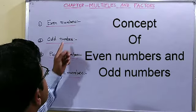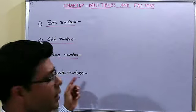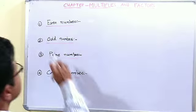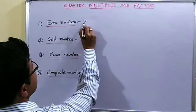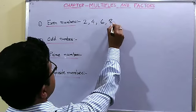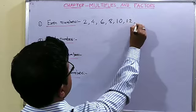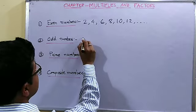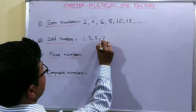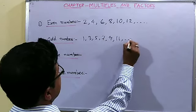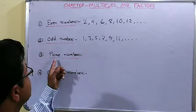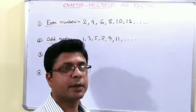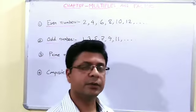We have understood what are even numbers and what are odd numbers. Even numbers are the multiples of 2: 2, 4, 6, 8 and so on. The numbers which are not multiples of 2 are all odd numbers — they start from 1: 1, 3, 5, 7, 9, 11. Now please listen carefully. What is the definition of prime numbers? Prime numbers are those numbers which have only 2 factors.